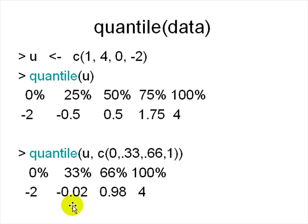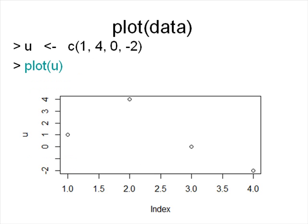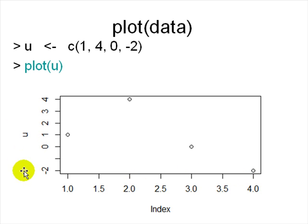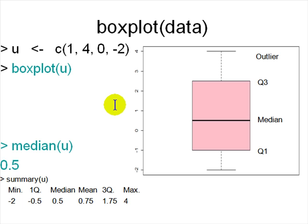You can plot the quantiles, so 1 is here, 4 is here, 0 is here, and -2 is there, with the index on the x-axis and u on the y-axis. R has a lot of ways of plotting data, and you'll find hundreds of ways when you search on Google, to represent your data visually and choose one that shows the data distribution very clearly.